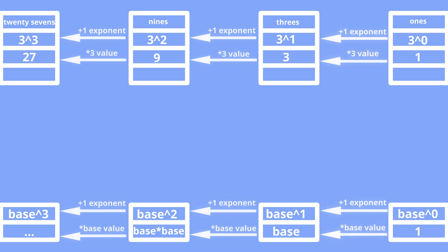In the base 3 number system exponents of the weights start from 0 and are increased by 1 from right to left.